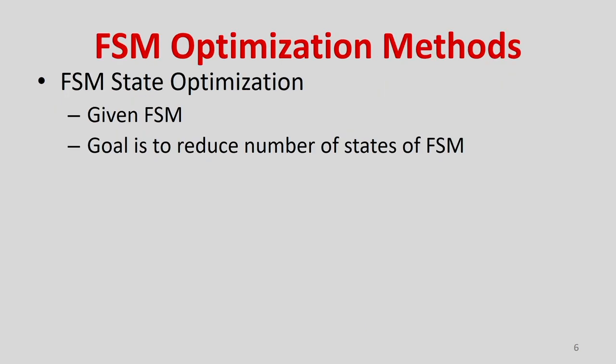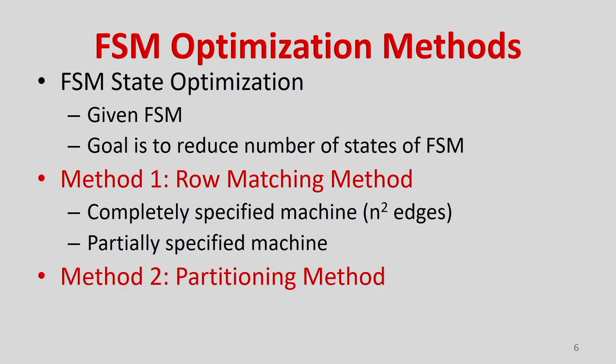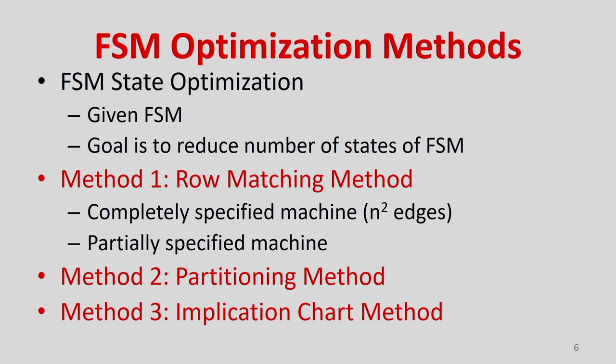FSM optimization: given an FSM, the goal is to reduce the number of states. We look at two methods particularly. Method one is the row matching method, which works on completely specified machines where there are N-squared edges. Method two is the partitioning method. The third is the implication chart method, but today's class focuses on method one and method two.